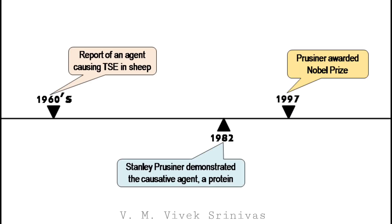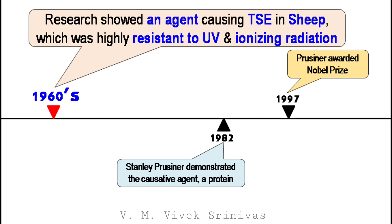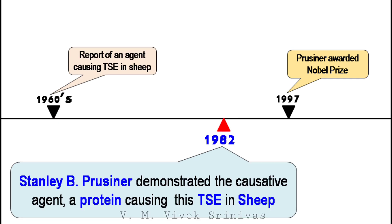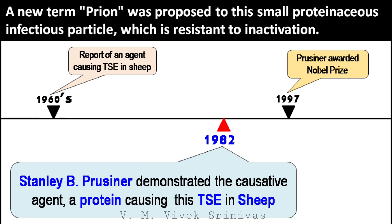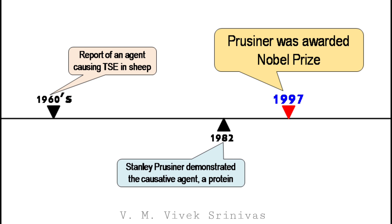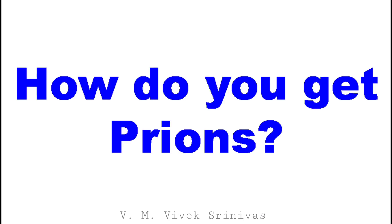Prion discovery. In the late 1960s, research showed that an agent causing transmissible spongiform encephalopathy in sheep — that is, scrapie — was highly resistant to ultraviolet and ionizing radiation. In 1982, Stanley B. Prusiner demonstrated that this scrapie-causing agent was a protein, and he gave a new term for this agent: prion. Prions are small proteinaceous infectious particles and are resistant to inactivation by most procedures that modify nucleic acids. In 1997, Prusiner was awarded the Nobel Prize for his work.